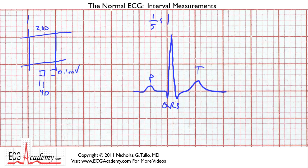Other parts we need to be concerned about: the PR segment, which is the part between the P and the QRS complex; and the ST segment between the S wave and the T wave. Remember, the first negative deflection is a Q, then the first positive deflection is an R, and following the R you can have an S wave. The point where the QRS complex ends and the ST segment begins is known as the J point.